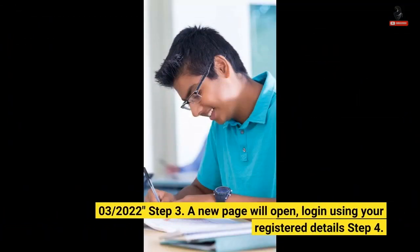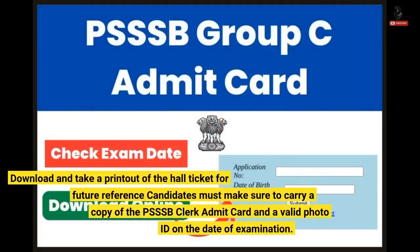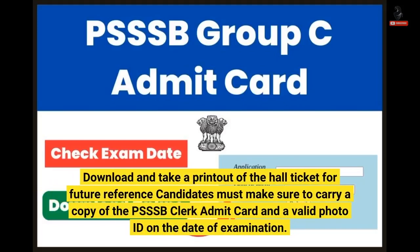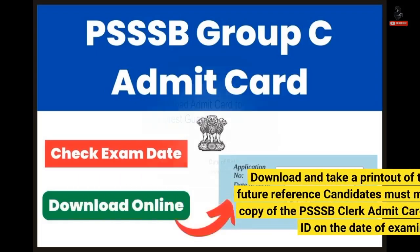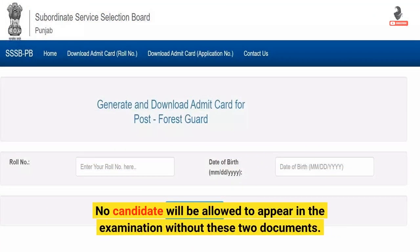Step 3: A new page will open — log in using your registered details. Step 4: Download and take a printout of the hall ticket for future reference. Candidates must make sure to carry a copy of the PSSSB Clerk Admit Card and a valid photo ID on the date of examination. No candidate will be allowed to appear in the examination without these two documents.